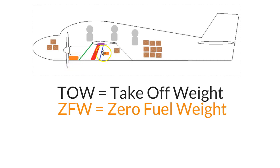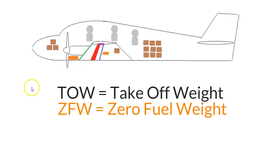The main tanks should be used for taxi, startup, takeoff, climb, and descent. As soon as you've finished your climb and you're in cruise mode, the auxiliary tanks should be used first. Then, once they're exhausted, you go back to the main tanks. So other than taxi, startup, takeoff, and climb, you should burn from your auxiliary tanks first.